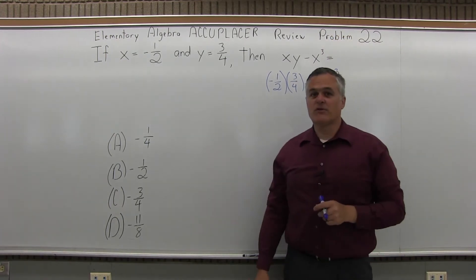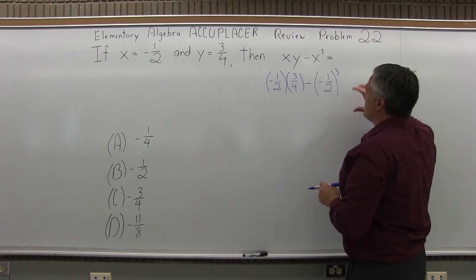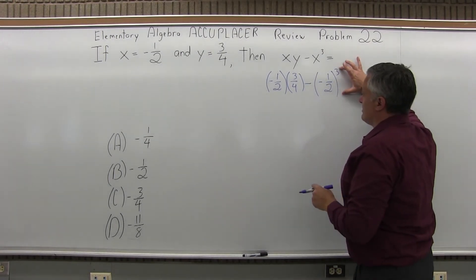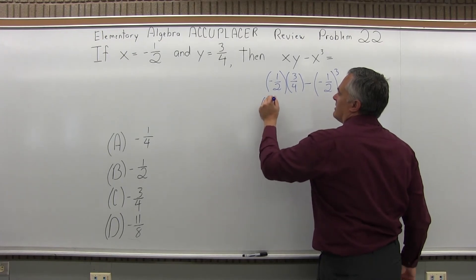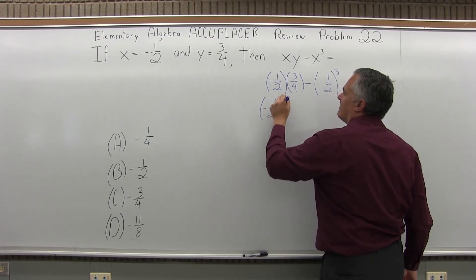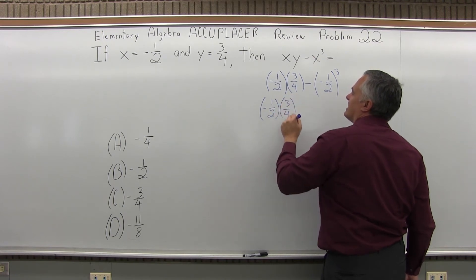So I've put in the numerical values for my variables. What I'm supposed to do first is that third power, so let me do that. I'll just leave the stuff on the left the way it is for this one step, so I'll just leave negative one-half times three-fourths and I'll do that in the next step.